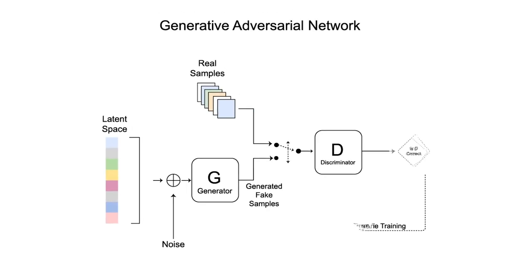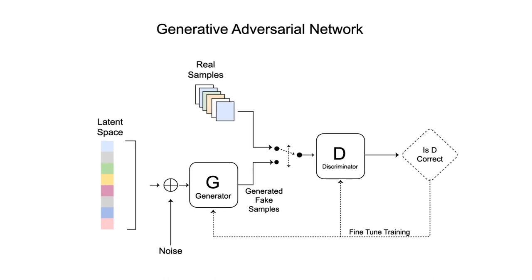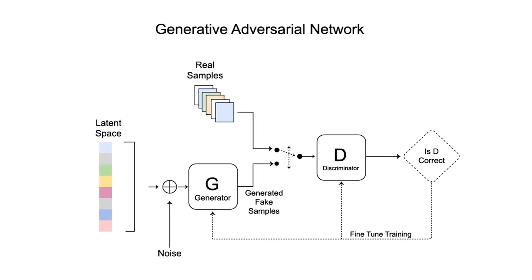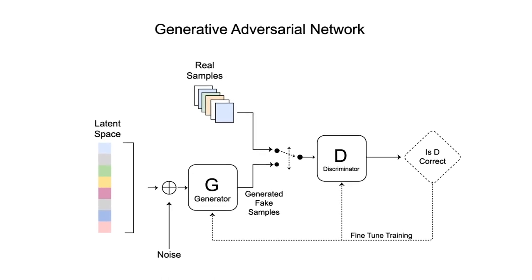A GAN is a generative adversarial neural network — basically you pitch two neural networks against each other. One of them tries to distinguish the simulated or generated event from a true one, and the other tries to fool it. It has at its disposal a set of correct true examples, and you train one of the neural nets to fool the other.